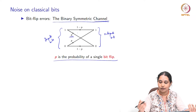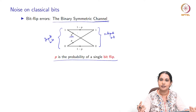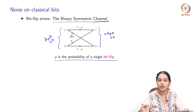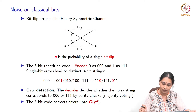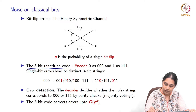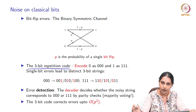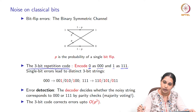How does the classical system deal with this kind of noise? The solution is rather intuitive: instead of sending a single bit, you introduce redundancy. Technically, you would say that you encode. Classically what we do is what is called the 3-bit repetition code, where the idea is to encode a single 0 as a string of three 0s and encode a single 1 as a string of three 1s.